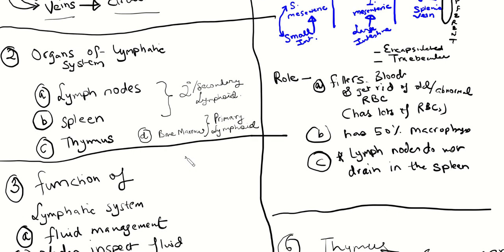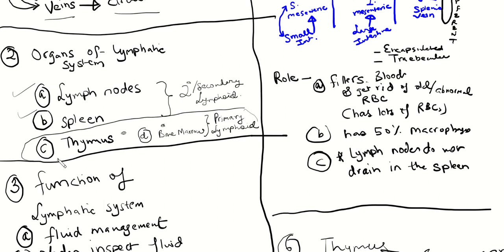To recap: we talked about the organs of the lymphatic system. We had the thymus and the bone marrow as the primary lymphoid organs — because that's where we develop and mature the lymphocytes. Then lymph nodes and spleen are secondary lymphoid organs — that's where lymphocytes circulate, get used, and ultimately end up.